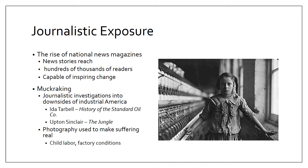Another aspect of muckraking that had to do with modern technology was photography. Photography was getting better and cheaper, so muckrakers were able to use it to show all of the awful conditions to people. A photo is worth a thousand words — the muckrakers understood this. You can read about child laborers, but it is a different thing to see pictures of them. They used photography to show people just how bad things really were, including pictures of child laborers taken by muckraking journalists.